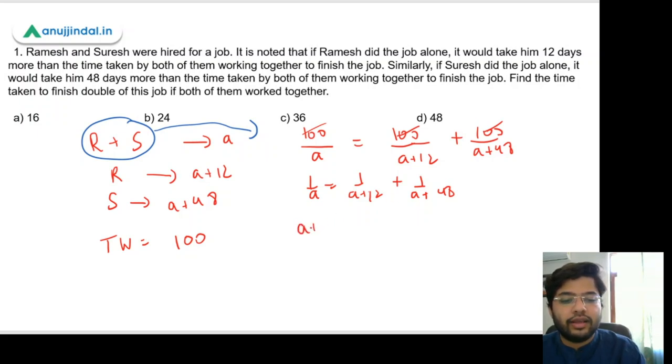So what we will get is (a+12) times (a+48) equals a times (a+12) plus a times (a+48).